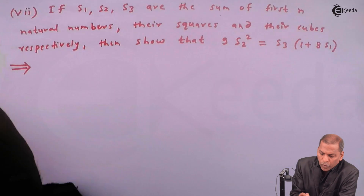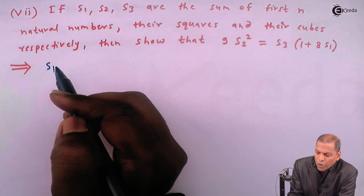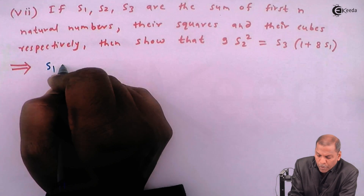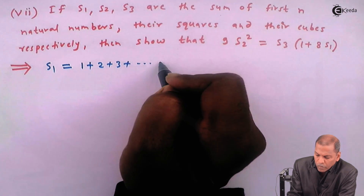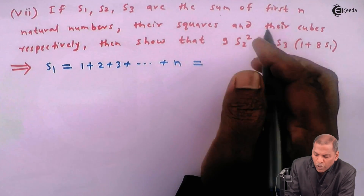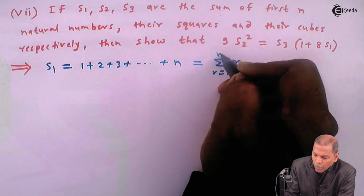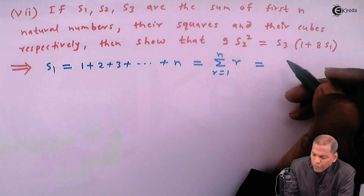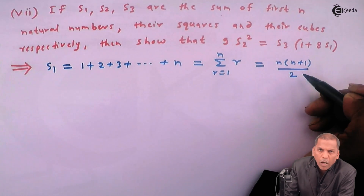First of all we write S1, given as the sum of the first n natural numbers. It means S1 = 1 + 2 + 3 + ... + n, which in summation notation is written as the sum of r from r = 1 to n, and by using Theorem 1 that equals n(n+1)/2.